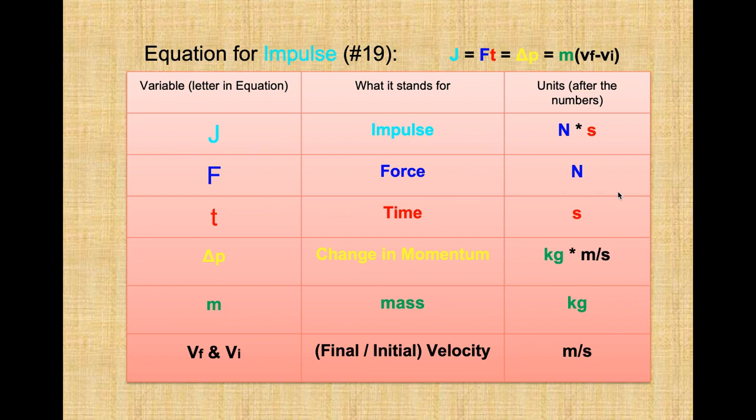Impulse can equal a lot of other things, including delta p, or the change in momentum. Remember that momentum — p — is equal to mass times velocity. Mass needs to be in kilograms and velocity needs to be in meters per second, so the units for momentum are kilograms times meters per second. We also have mass with final velocity and initial velocity. Those little letters — the F and I — are simply subscripts there to identify what you're talking about.